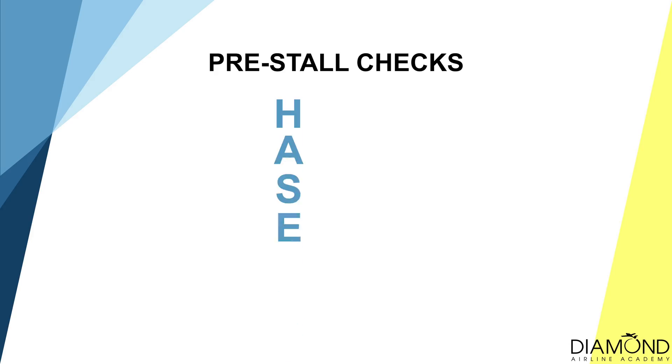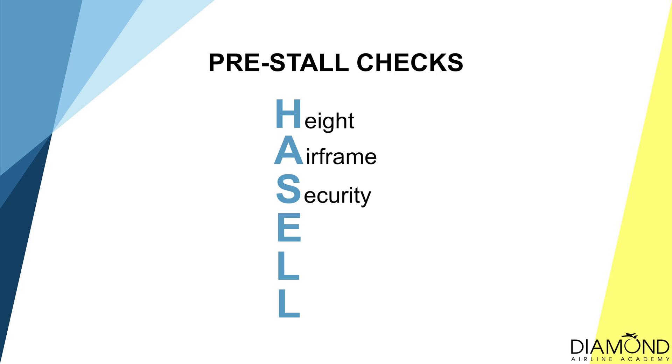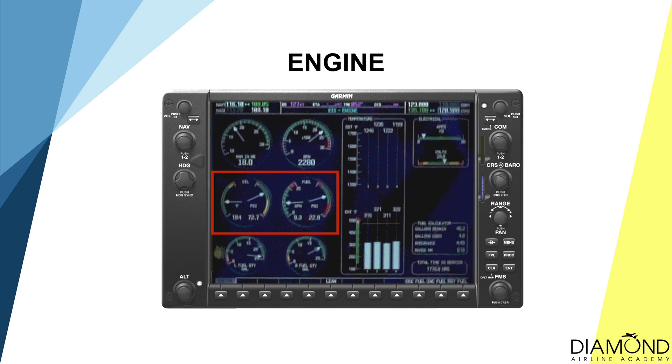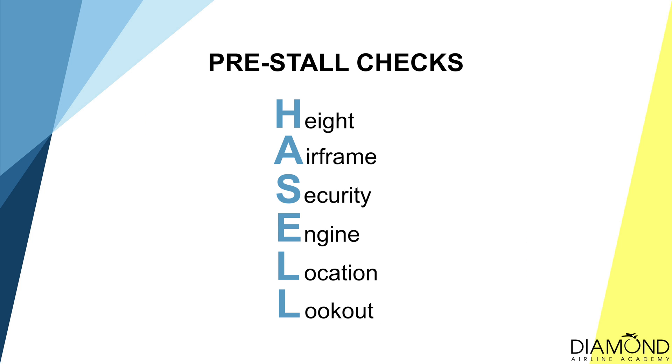When practicing advanced stalls in flight, there are some precautionary checks to be done beforehand — these are the pre-maneuver checks, the HASEL check. H-A-S-E-L-L. Recover from the stall by 3,000 feet above ground level. Ensure the airframe is not damaged. Ensure the hatches are closed and locked, seatbelts are tightly fastened, and heavy items have been stored securely. Engine: check the oil temperature and pressure is in the green range. Location: only conduct stalls above a non-populated area. Lookout: conduct a 360-degree medium-level turn lookout to ensure the surrounding airspace is clear of other traffic and obstacles.